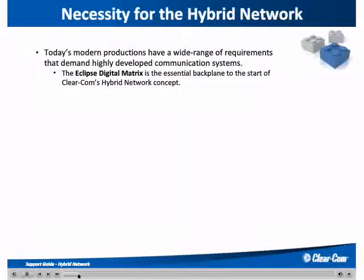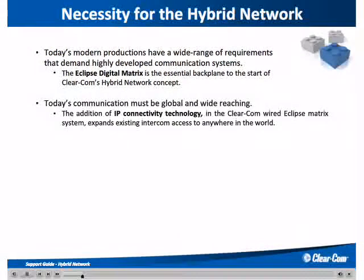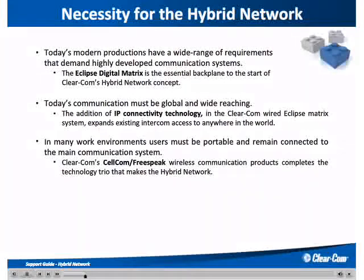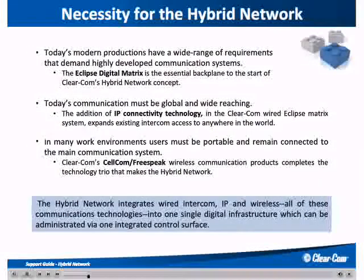Let's look at how the hybrid network fills the demands for today's communication needs. Most modern productions require layered communication systems. ClearCom's Eclipse digital matrix forms the backbone of the hybrid network. Today's interactions must be universal. The Eclipse system, with the addition of IP technology, makes global intercom access possible. We see the increased need for user portability when communicating. Answering this need is the ClearCom Cellcom FreeSpeak wireless product, which rounds out the hybrid network. In review, the hybrid network integrates these three technologies into a single digital communications platform. In the next few minutes, we will discuss what these technologies comprise and their capability.